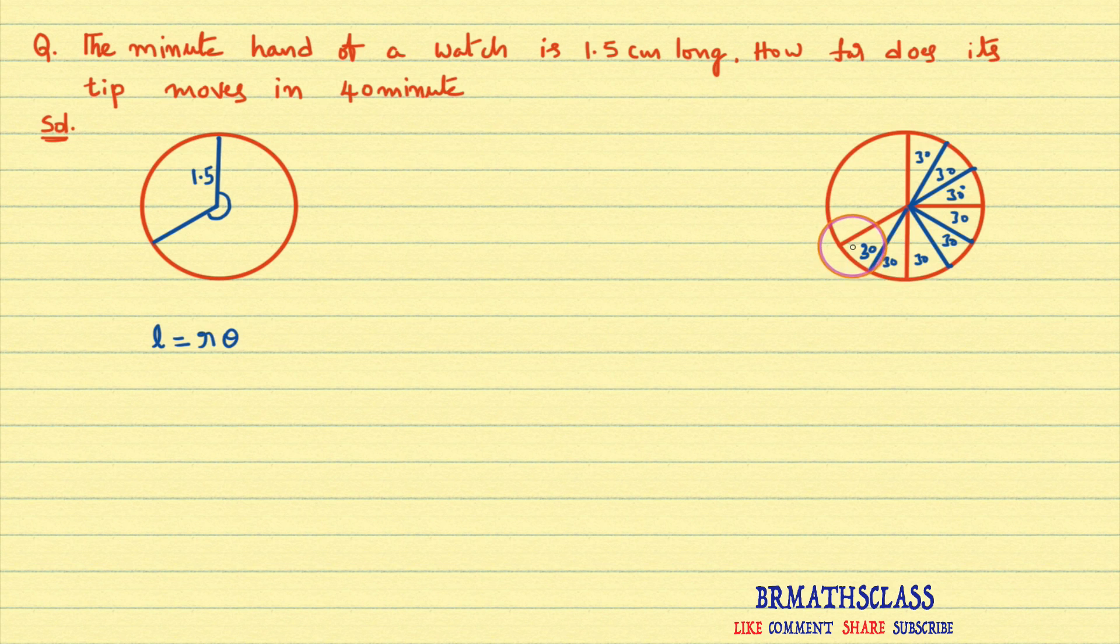Like that, 180 plus 60, that means 240 degrees. So this angle is 240 degrees. We know that in this formula, theta is in radian measure.